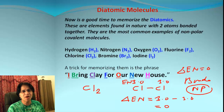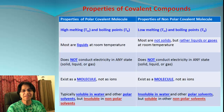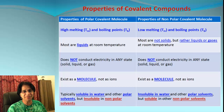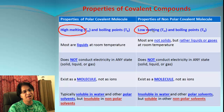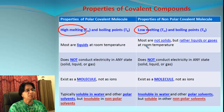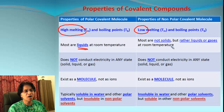That means the bonds will be non-polar, and that makes the compound also non-polar. Now let's compare the properties of polar and non-polar covalent compounds. Polar compounds will have high melting point and boiling point, whereas non-polar covalent compounds will have relatively low melting points and boiling points. Most polar compounds will be liquids at room temperature, whereas most non-polar compounds could be liquids or gases.